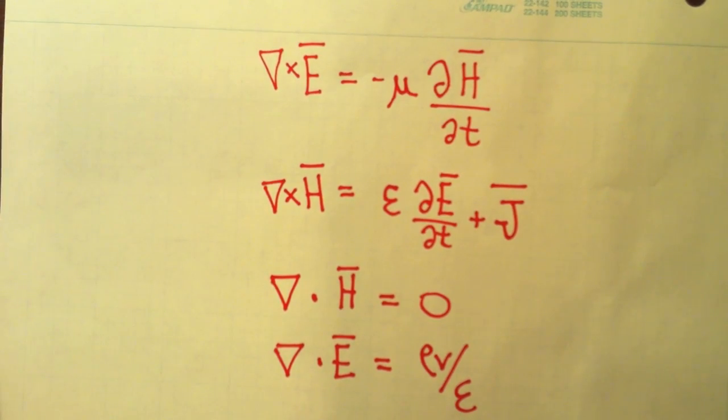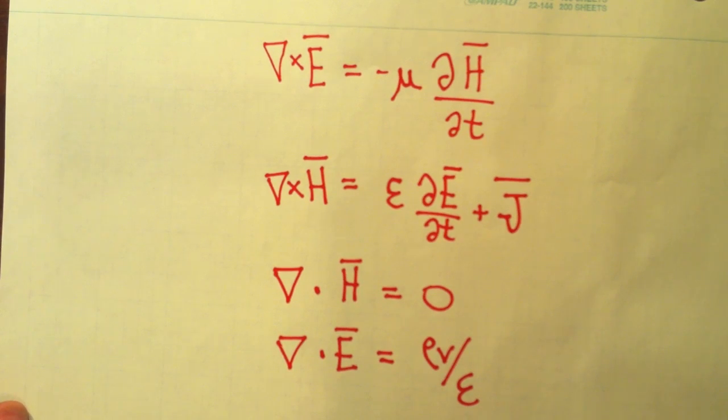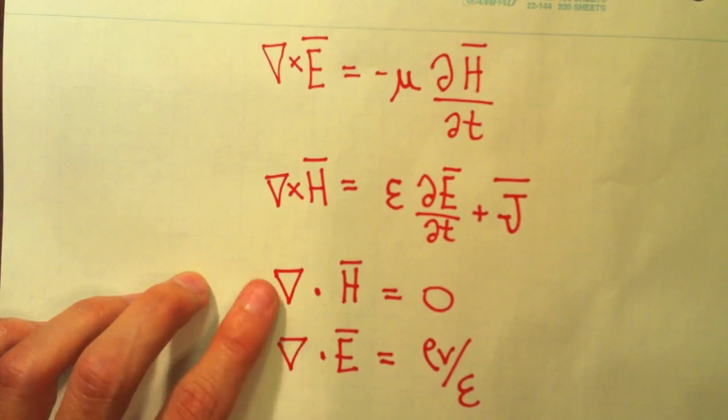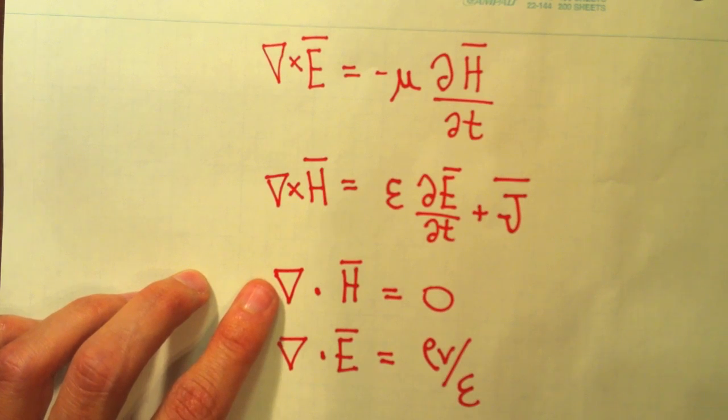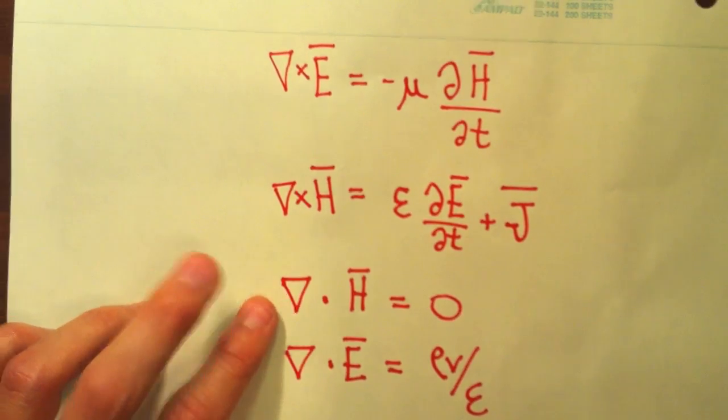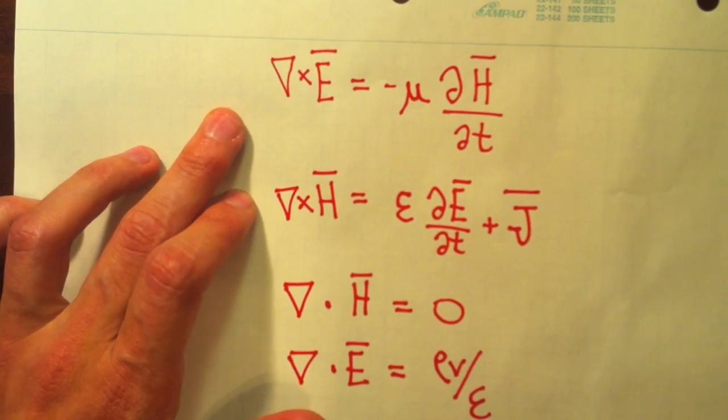So there's four equations here. Four equations that govern the world as far as antennas is concerned. The last two, Gauss's law and the non-existence of magnetic monopoles, are useful for solving certain problems, but really, antenna theory, we're going to concentrate on these two.